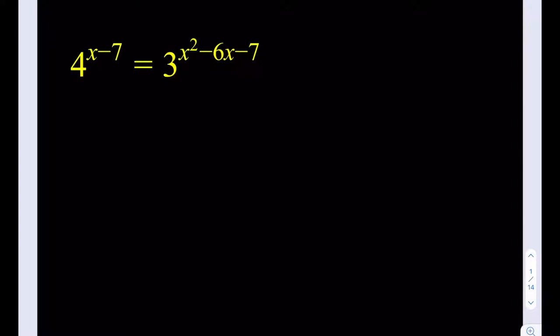Now notice that the exponent for 3 is actually factorable, so let's go ahead and factor that. x squared minus 6x minus 7 can be factored as x minus 7 times x plus 1.